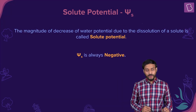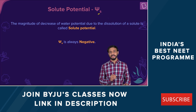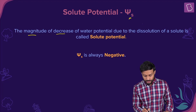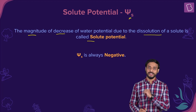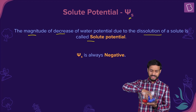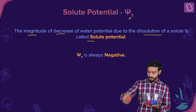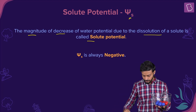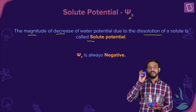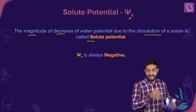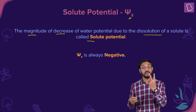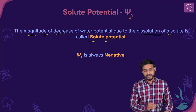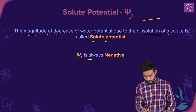Can you define solute potential, that is ψs? It's the magnitude — the magnitude by how much the water potential is decreasing due to the dissolution of the solute — that is the solute potential. Initially when there were only the blue balls, the water potential was 4. After addition of solute, reduction by two units. So the magnitude of the decrease of water potential due to the addition of solute molecules is the solute potential. It is always negative because it is reducing — don't forget about the number line.